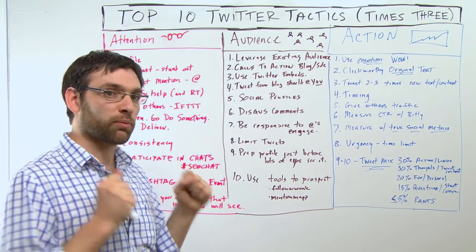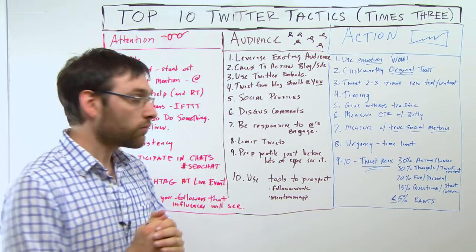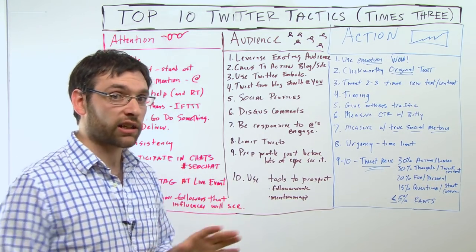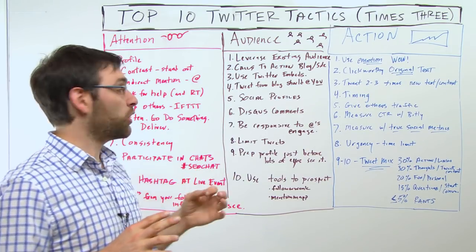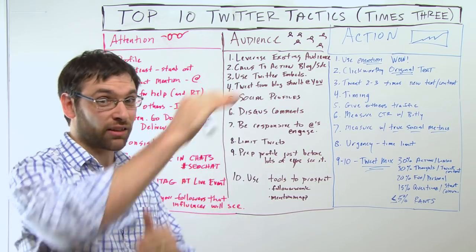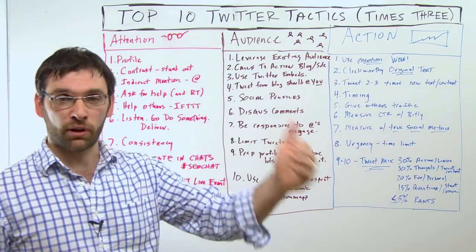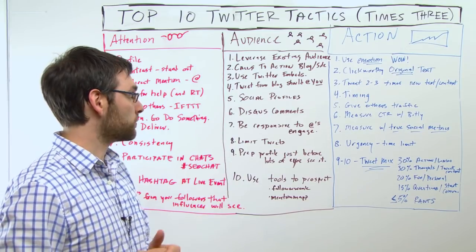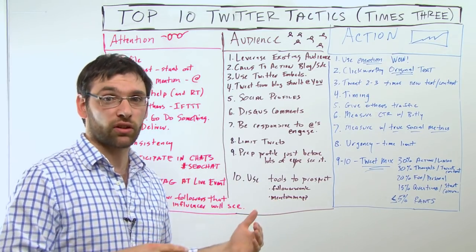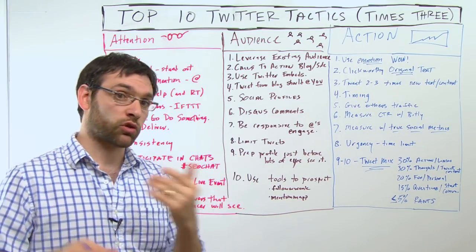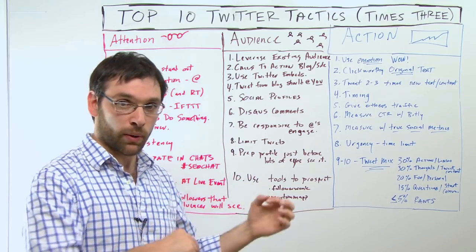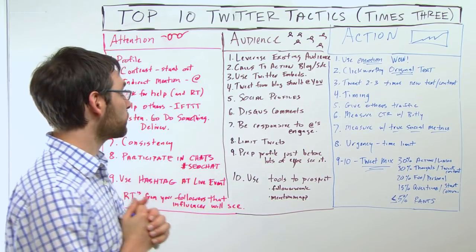Number two: calls to action on your blog or on your site. If you're doing a new post or even a guest post — that's a great tactic for this — you can put a call to action right in the text in a place where you know people notice. Usually the beginning and end works very well: 'Follow me on Twitter, here's where you can find me.' Rand talked about strategically placing calls to actions for social media on your website in a previous Whiteboard Friday — you should check that out.